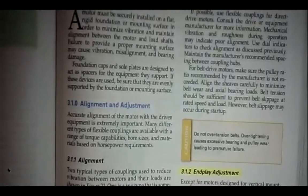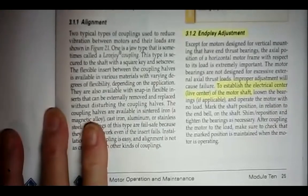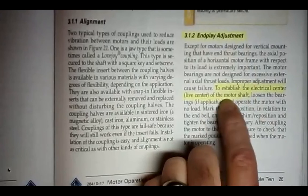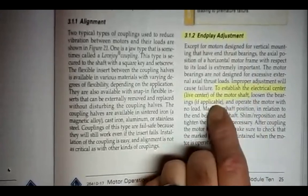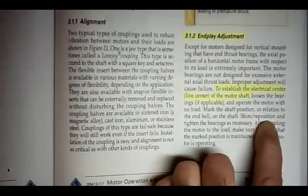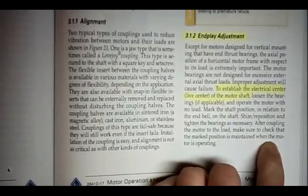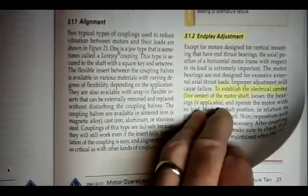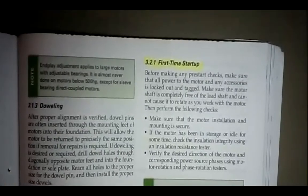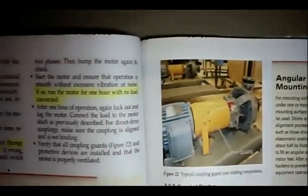On page 25, they're talking about motor installations and commissioning guidelines. So, on page 25 on the right-hand column, end play adjustment. To establish the electrical center of the motor shaft, loosen the bearings, if applicable, and operate the motor with no load. Mark the shaft position in relation to the end bell on the shaft. Shim reposition and tighten the bearings as necessary after coupling the motor to the load. Make sure to check that all the marked positions is maintained when the motor is operating. So, you don't want it to be under distress. 3.2.1, first time startup. That's the only thing that I highlighted. I guess there's information on the next page that we need to know that this is initial startup.